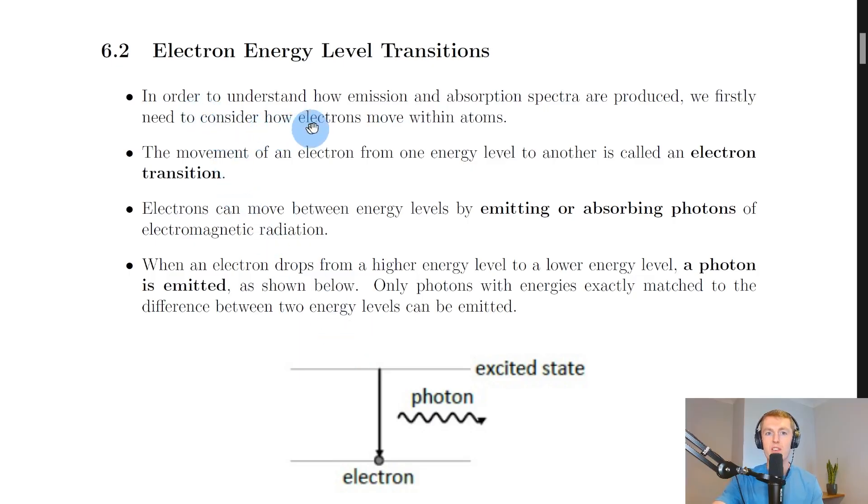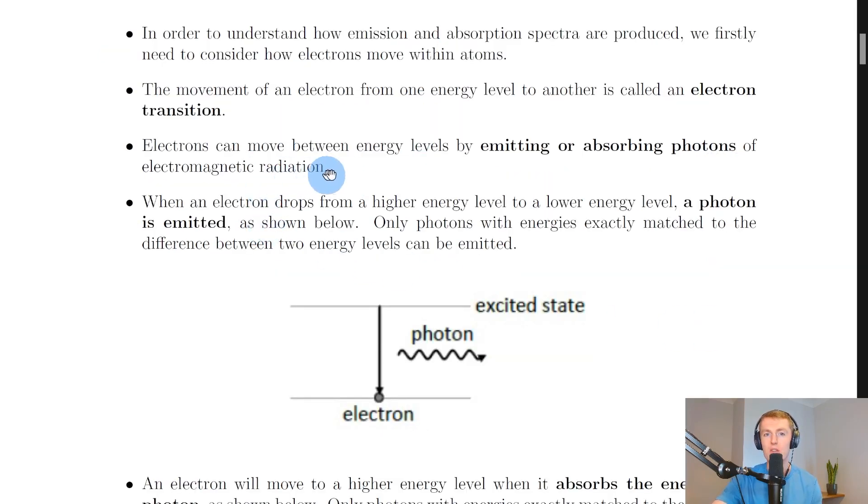In order to understand how emission and absorption spectra are produced, we firstly need to consider how electrons move within atoms. The movement of an electron from one energy level to another is called an electron transition. Electrons can move between energy levels by emitting or absorbing photons of electromagnetic radiation. And remember photons are just particles of light.